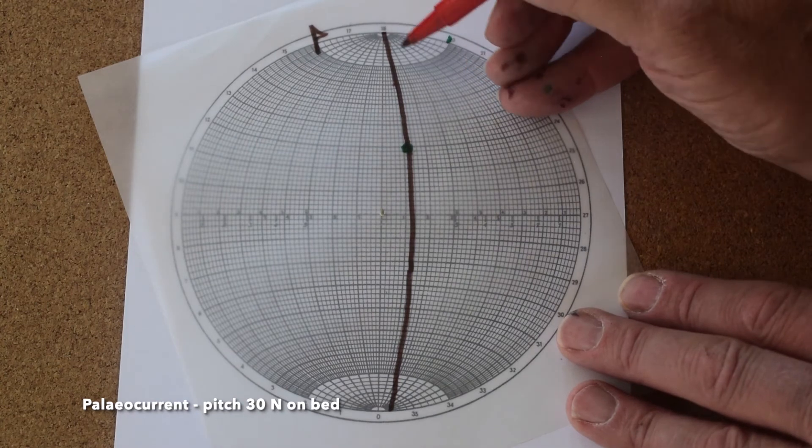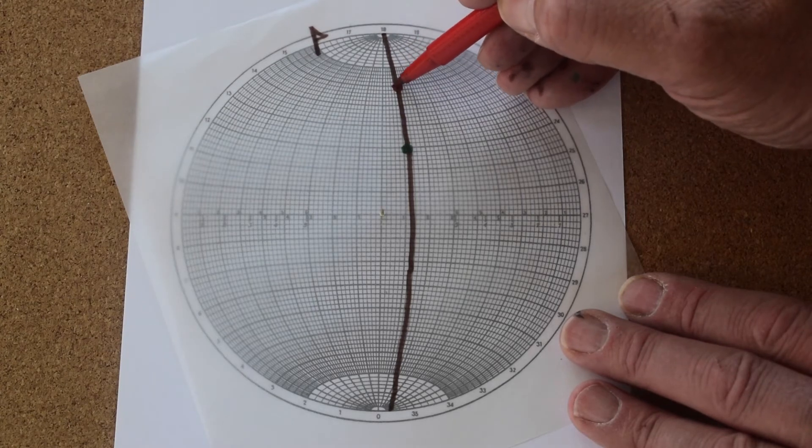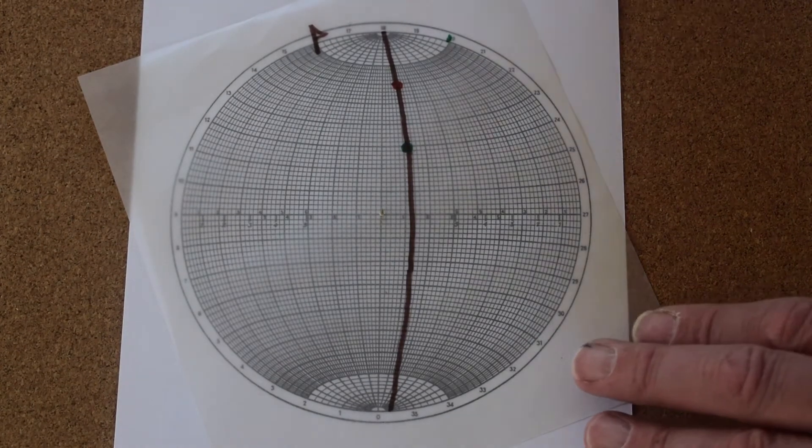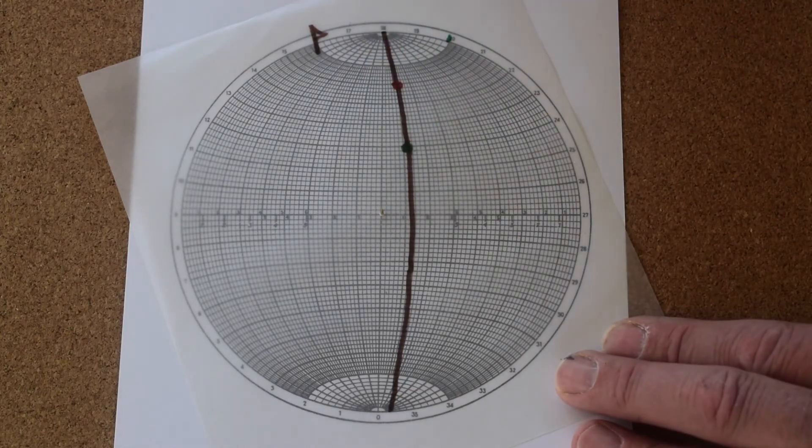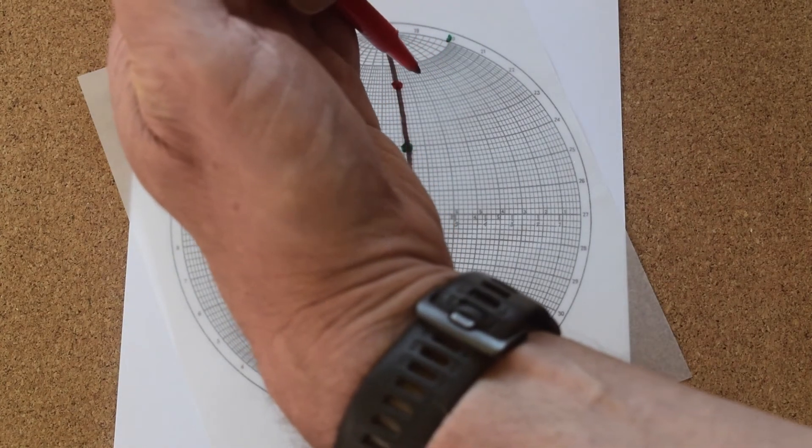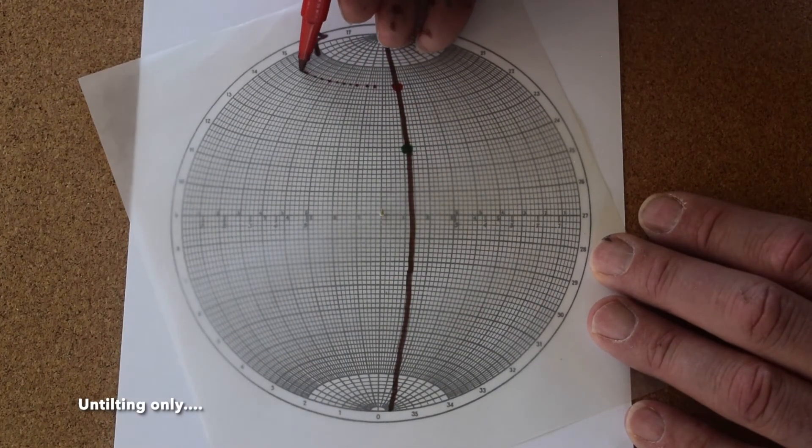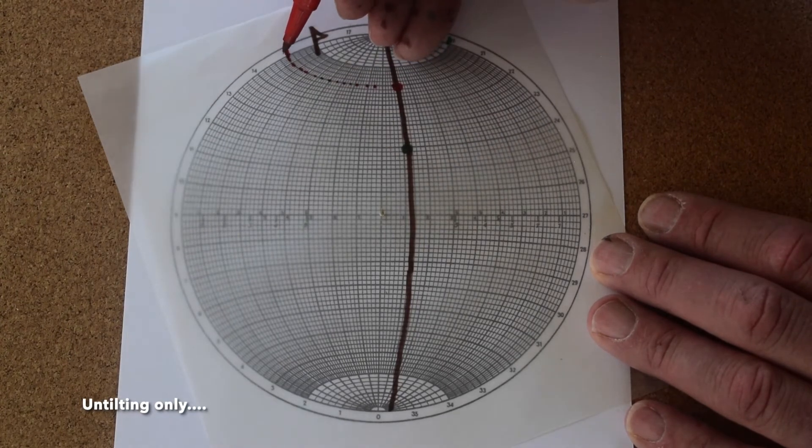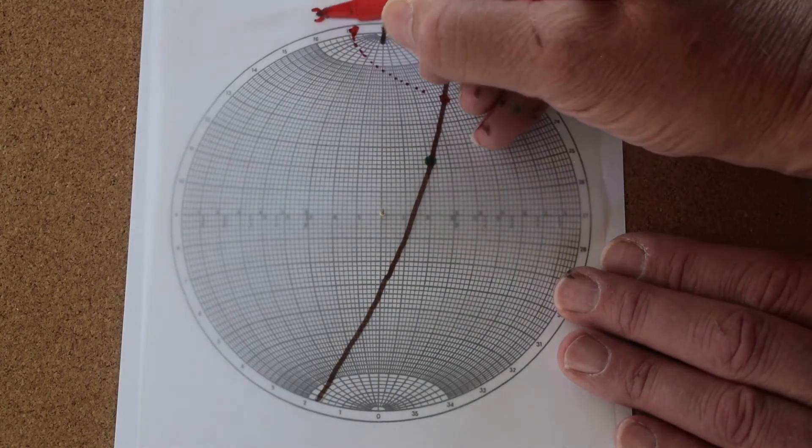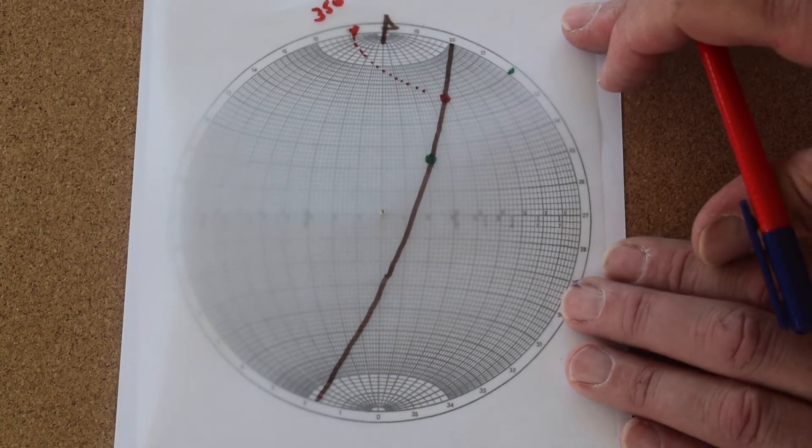So if we were to simply untilt this bed without thinking about the fold structure, and the paleocurrent has assumed that it's like this and on the inverted bed surface, so it'll spin out over to here, which means it will follow this trajectory here, and hit the edge of the stereo net in this position when the bed is horizontal. And that orientation, if we spin it around, we can see it's a bearing of 350. So that's the restoration of our paleocurrent, ignoring the fact it's in the fold, and just using a simple untilting method.